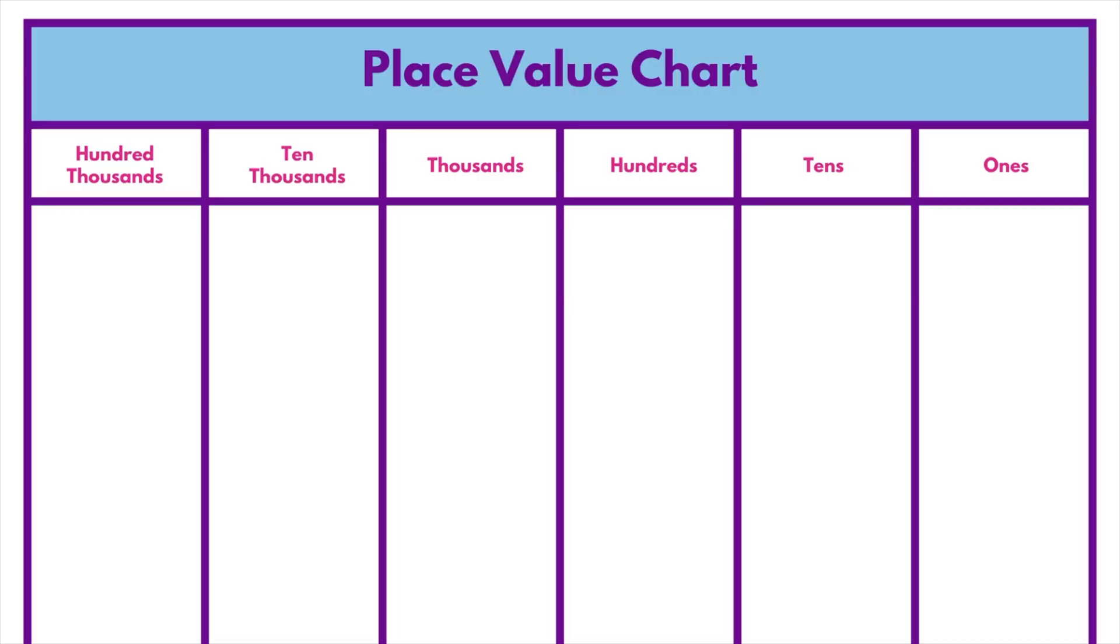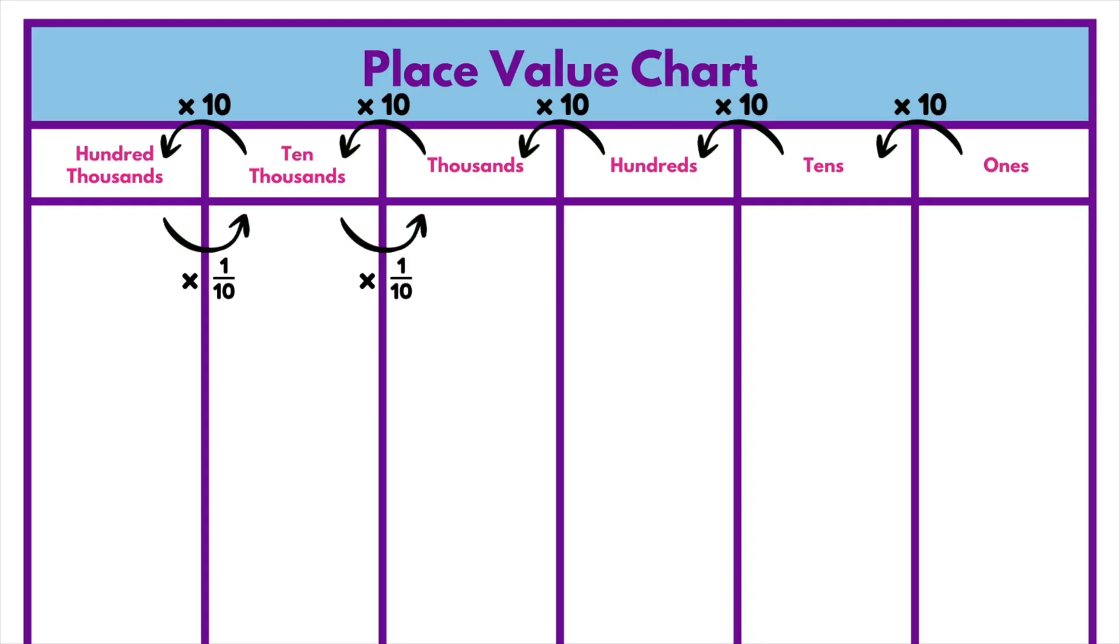10 ones make one 10, 10 tens make 100, and 10 hundreds make 1,000. And it works in reverse too. Each place to the right is one-tenth the size of the place before it.